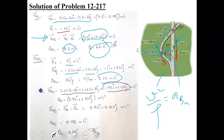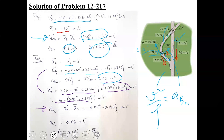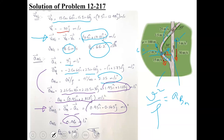We combine the tangential and normal vectors to find the total acceleration aB. Then applying the relative acceleration equation, aBC equals aB vector minus aC vector, giving us the relative acceleration vector with its magnitude and direction.